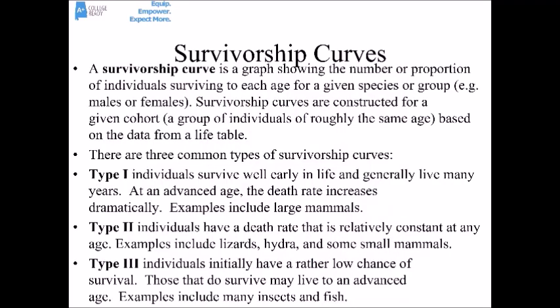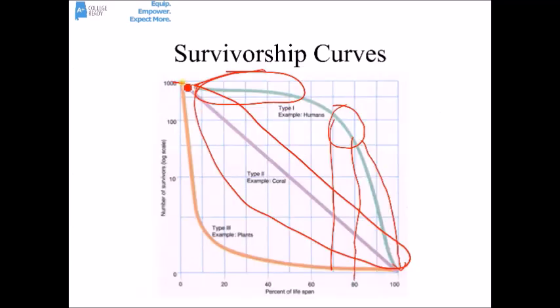In a type 3 survivorship curve, these organisms have a very low chance of survival at the beginning of life because their parents aren't really providing much parental care at all. Those that do make it may live to a fairly advanced age. This kind of survivorship curve is exhibited by lots of insects and fish. At the beginning of a type 3, most of the organisms die before they reach any measurable age, but if they make it, some of them live for a fairly long time until, by the end of the life expectancy, they're all gone.